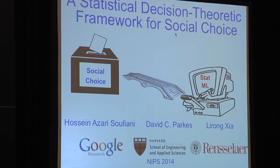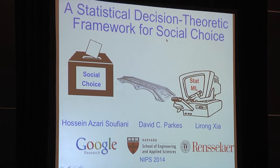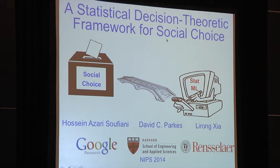Our second talk is on a statistical decision theoretic framework for social choice, given by Laron Gza. This is joint work with Hossein Azari-Sufiani, who just joined Google, and David Parks, who is still at Harvard. In one sentence, we build a new bridge between social choice problems and statistics and machine learning, corresponding to a new paradigm toward the design and analysis of social choice mechanisms.